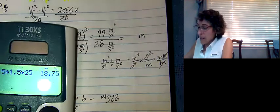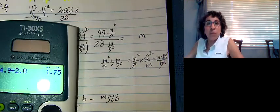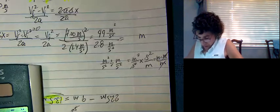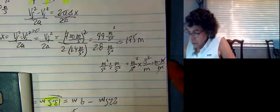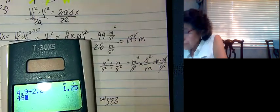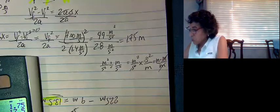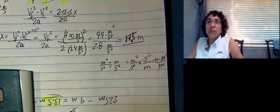Plugging in: 7.00 meters per second squared is 49 meters squared per second squared, divided by 2 times 1.4, which is 2.8 meters per second squared. The seconds squared cancel out leaving meters. So 49 divided by 2.8 equals 17.5 meters. That's the answer to problem 23 — the boy travels 17.5 meters to reach 7.0 meters per second from rest.